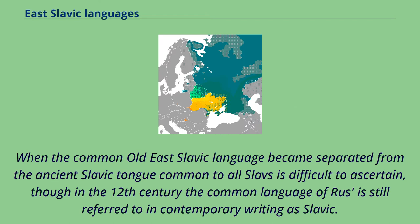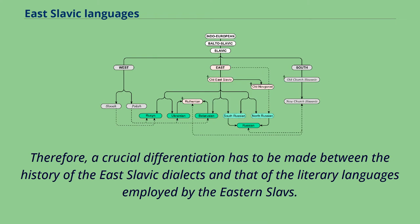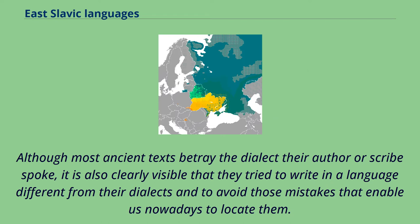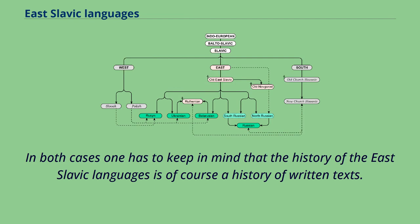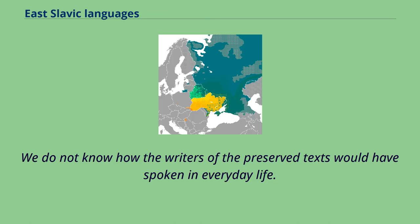When the common Old East Slavic language became separated from the ancient Slavic tongue common to all Slavs is difficult to ascertain, though in the 12th century the common language of Rus is still referred to in contemporary writing as Slavic. Therefore, a crucial differentiation has to be made between the history of the East Slavic dialects and that of the literary languages employed by the Eastern Slavs. Although most ancient texts betray the dialect their author or scribe spoke, it is also clearly visible that they tried to write in a language different from their dialects. In both cases, one has to keep in mind that the history of the East Slavic languages is of course a history of written texts, and we do not know how the writers of the preserved texts would have spoken in everyday life.